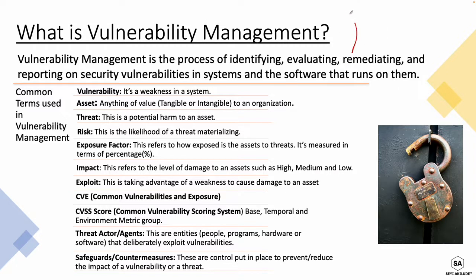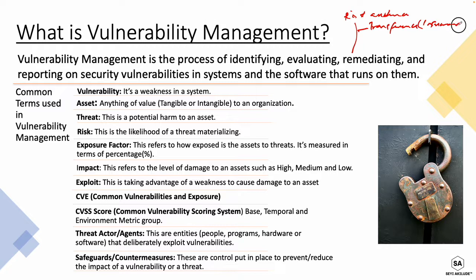The four risk treatments are: first, risk avoidance — ensuring we avoid identified risks; second, risk transference — outsourcing the responsibility of remediating that risk to a third party, more like using an insurance model; third, risk acceptance — types of risk that we accept because there's nothing we can do about them; and fourth, risk mitigation — where we put in specific controls to do something about the identified vulnerability.